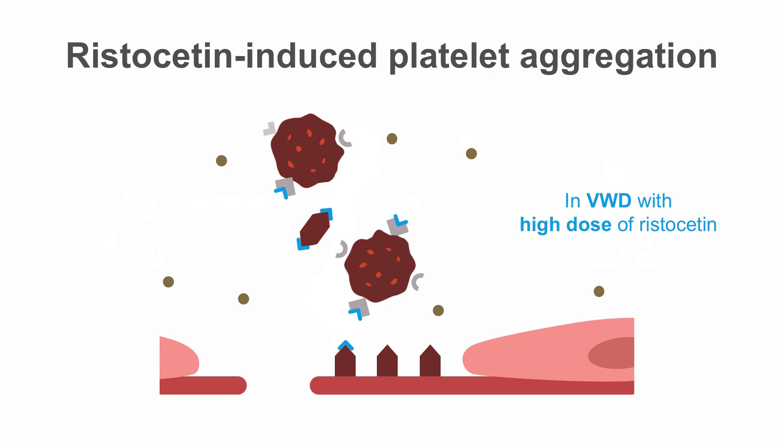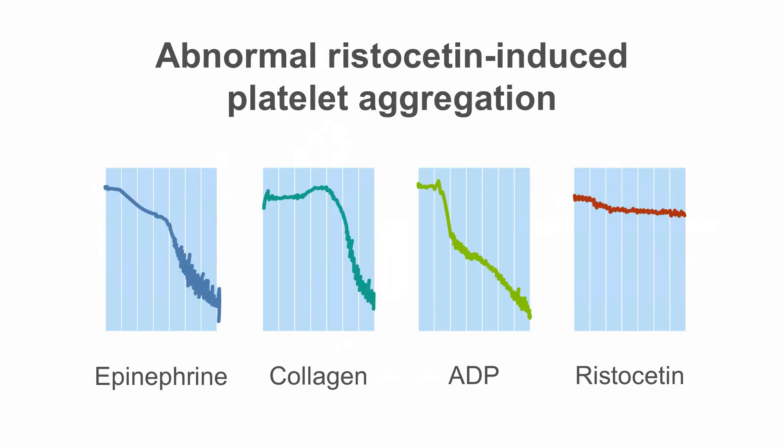However, in subtype type 2B, platelet aggregation is observed even with a low dose of ristocetin. This is because in type 2B the von Willebrand's factor has increased affinity for platelet GP1B, and even a small dose of ristocetin is enough to cause aggregation. This graph of a patient shows that with ristocetin the amount of platelet aggregation is negligible, however platelet aggregation with ADP, collagen, and epinephrine are normal. This is the characteristic pattern of ristocetin-induced platelet aggregation for von Willebrand's disease.